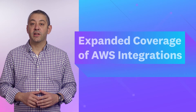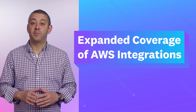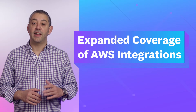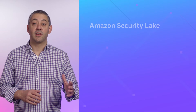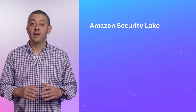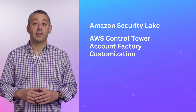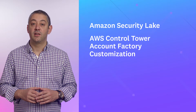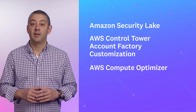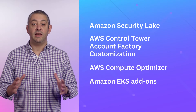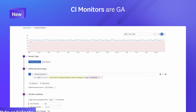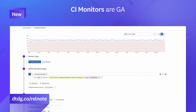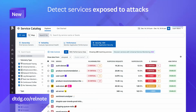This year at reInvent, we're excited to announce that we've expanded our coverage of AWS related services with new integrations for Amazon Security Lake, AWS Control Tower Account Factory Customization, AWS Compute Optimizer, and Amazon EKS add-ons. That was just a sneak peek of the many features we've released this month. For a complete roundup, visit the link shown.